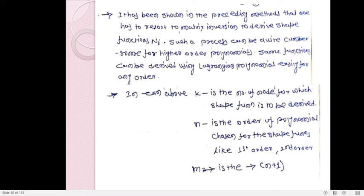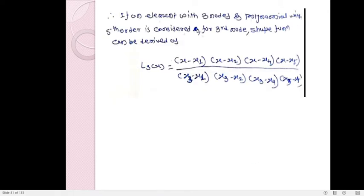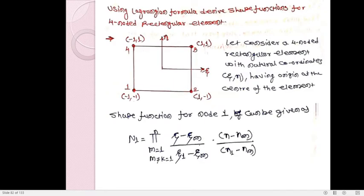We will come to this once again when we solve one numerical example. Here is one example where we will derive the shape functions of a four-noded rectangular element by using the Lagrangian formula. We will directly use this 2D element because it requires ξ and η coordinates. When we solve this, it will be easier for you to then apply this method to 1D elements as well.